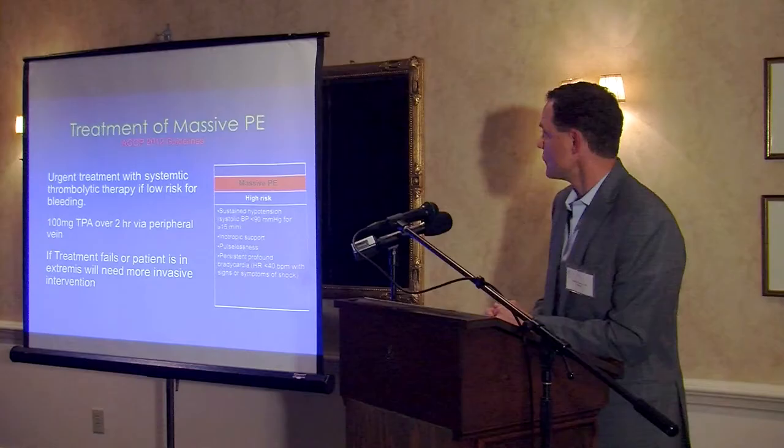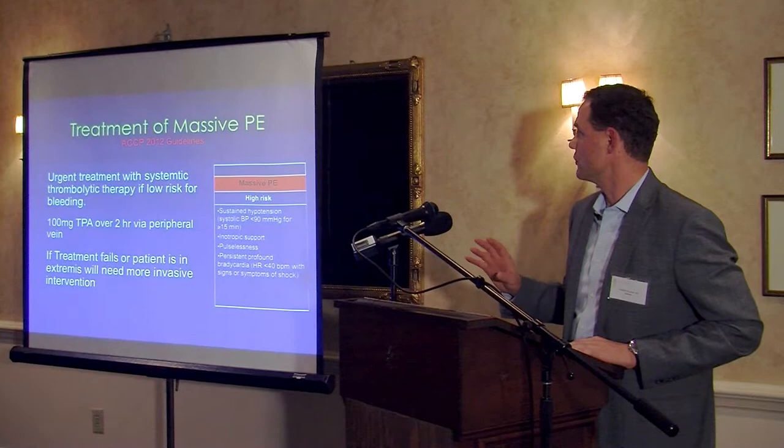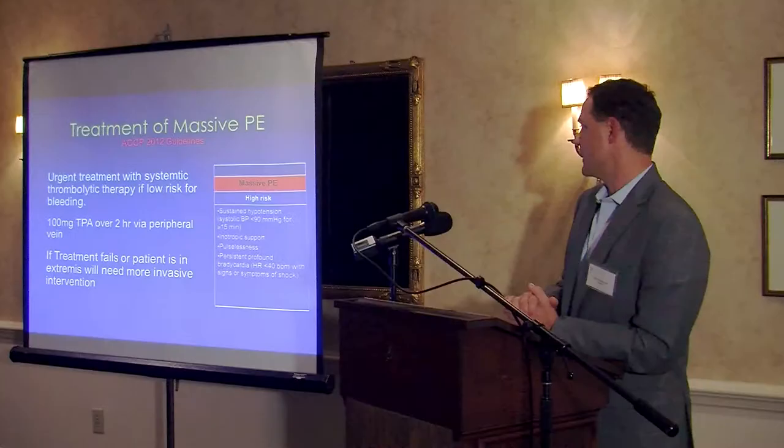I'll briefly touch on treatment of massive PE — the most uncommon category. These patients need urgent treatment. If they are not a significant bleeding risk, they all need systemic thrombolytic therapy — usually about 100 milligrams of TPA over two hours. That's per the most recent guidelines by the American College of Chest Physicians. If treatment fails or the patient is in extremis, there are more invasive interventions that can potentially be life-saving.